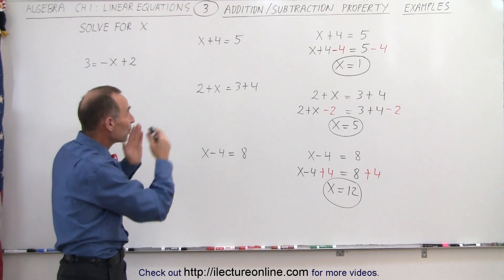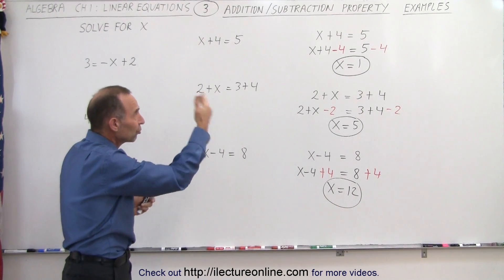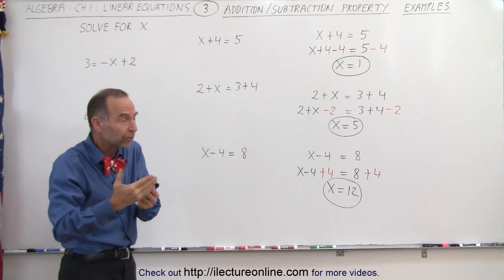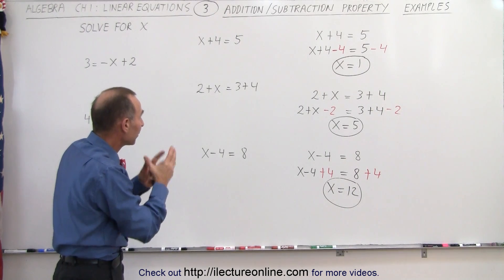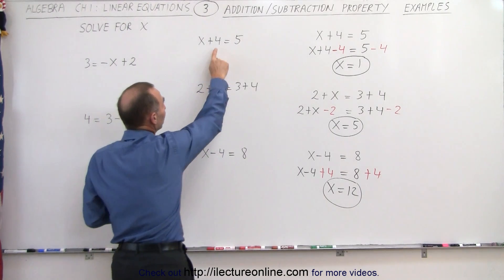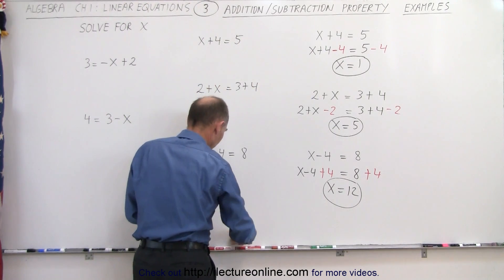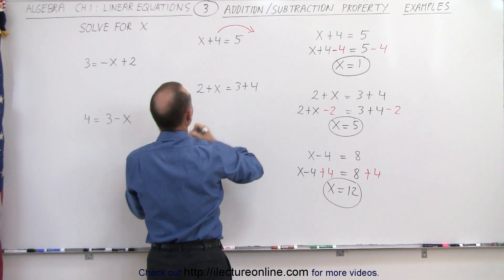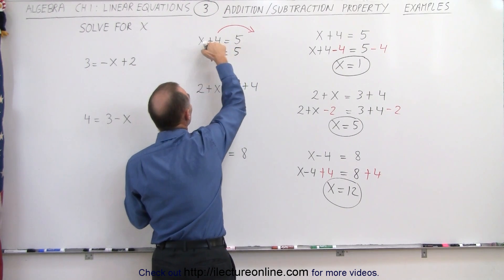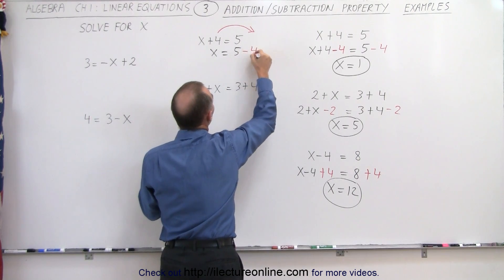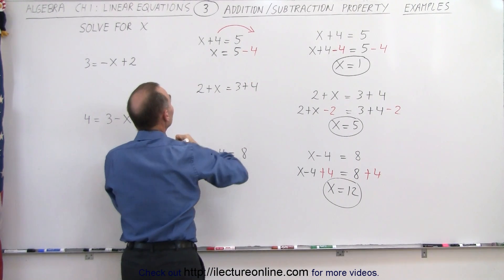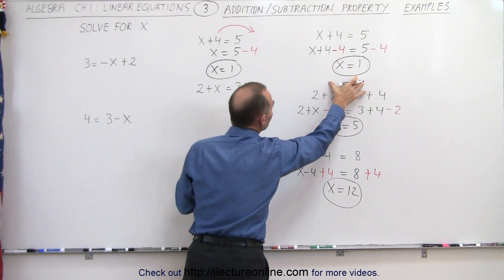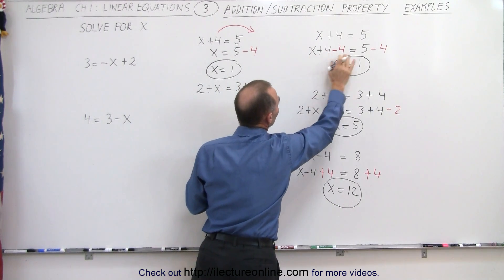Now we're going to solve the very same three equations, but instead of using the addition-subtraction property, we're going to simply move things across the equal sign. Remember, when we move things across the equal sign, we change the sign of that element or that particular term. So in this case, we don't want the 4 on the left side, we want to move it to the right side. When we move it, we change the sign. It was plus 4 on the left side, so it becomes minus 4 on the right side. We combine and get x is equal to 1.